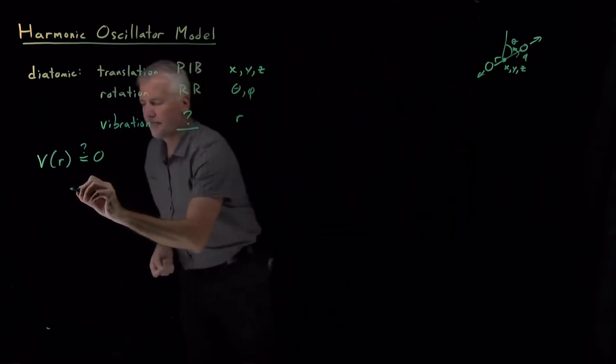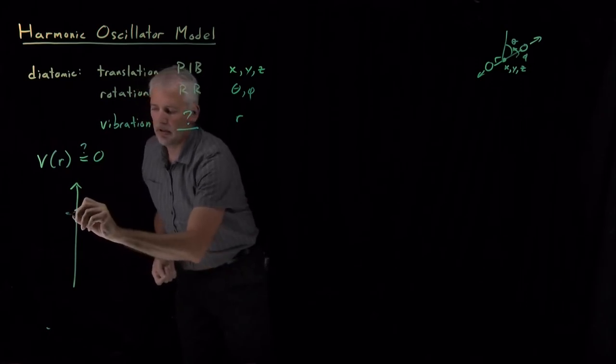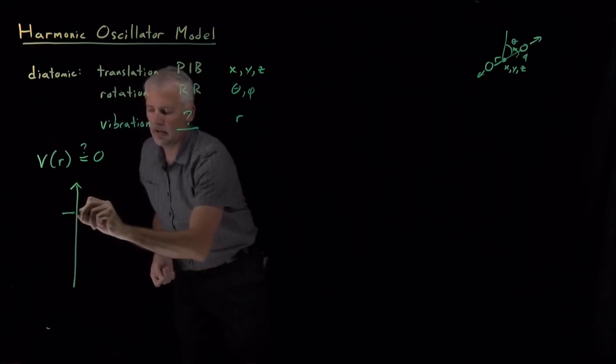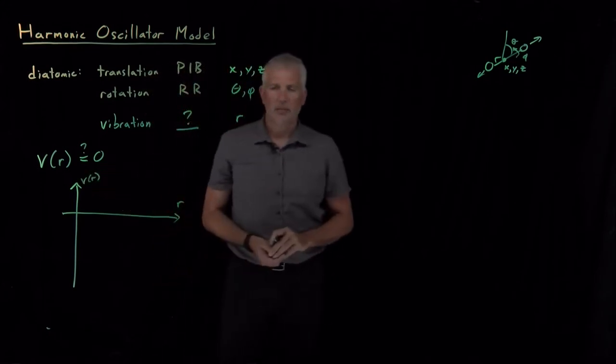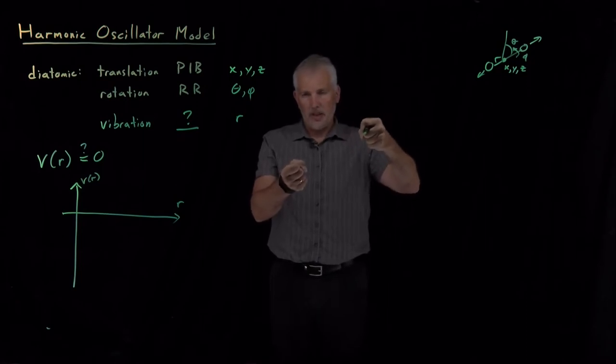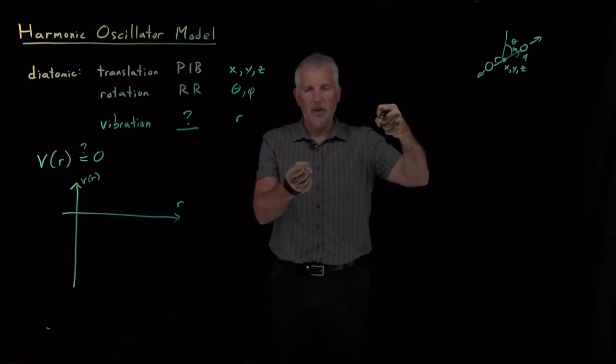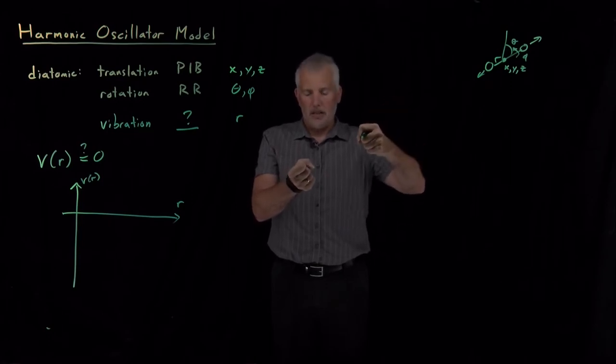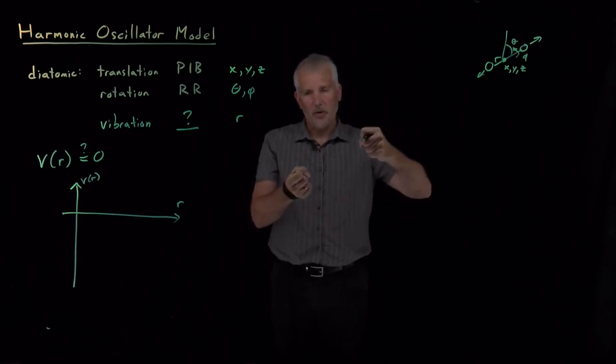If I draw a qualitative picture of what that potential energy should look like as I change the bond length. So I've got a molecule. It's at some bond length. If I stretch the bond, I'm going to have to put energy into the molecule to stretch the bond. I'm raising the energy of the molecule when I stretch the bond. Likewise, if I compress it below the bond length it would naturally tend to have, that's also going to require some energy.